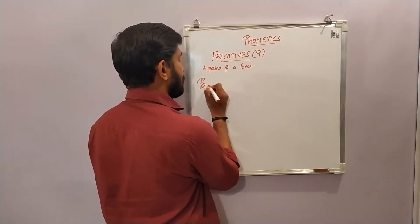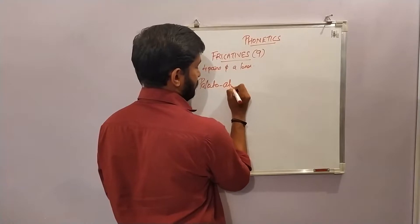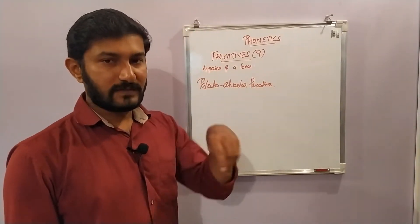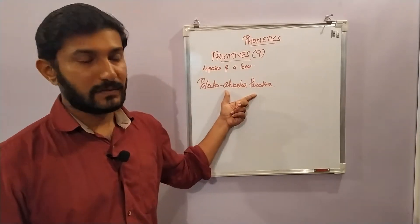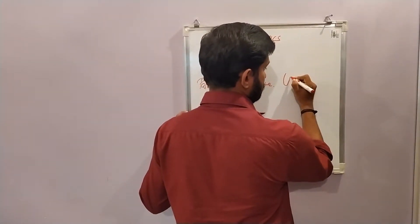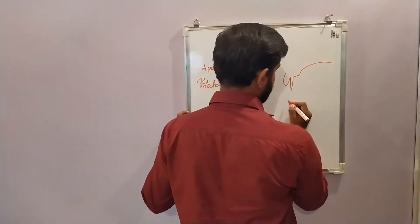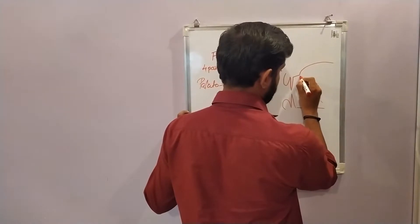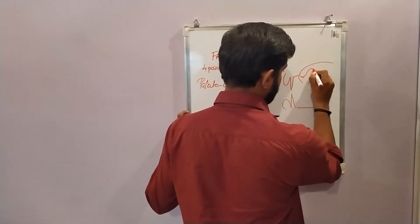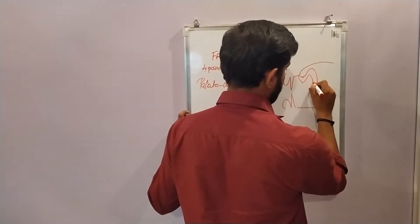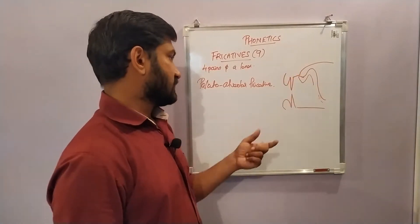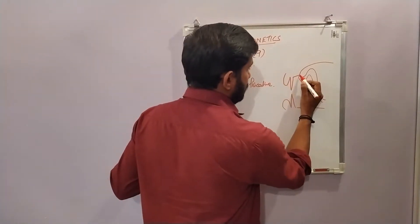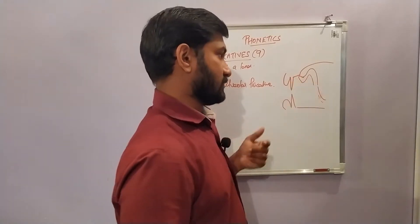The next pair: palato-alveolar fricatives. Here the articulating organs involve the palate or the roof of the mouth as well as the alveolar ridge. The articulation is like this: the tip or blade of the tongue approaches the upper portion of the teeth ridge, the post-alveolar portion.